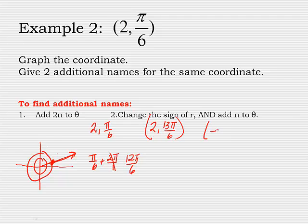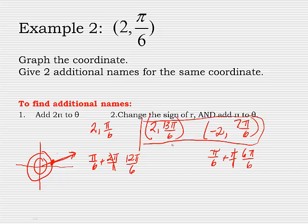And then the rule says to change the sign of r, and then take your angle and add a whole pi. Make it a common denominator. So that's 7 pi over 6. So there's my two renamed angles and my graph.